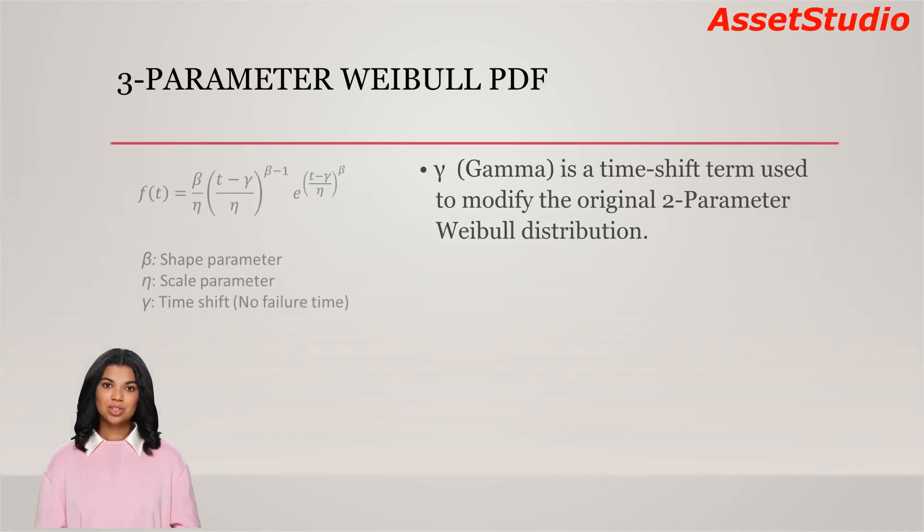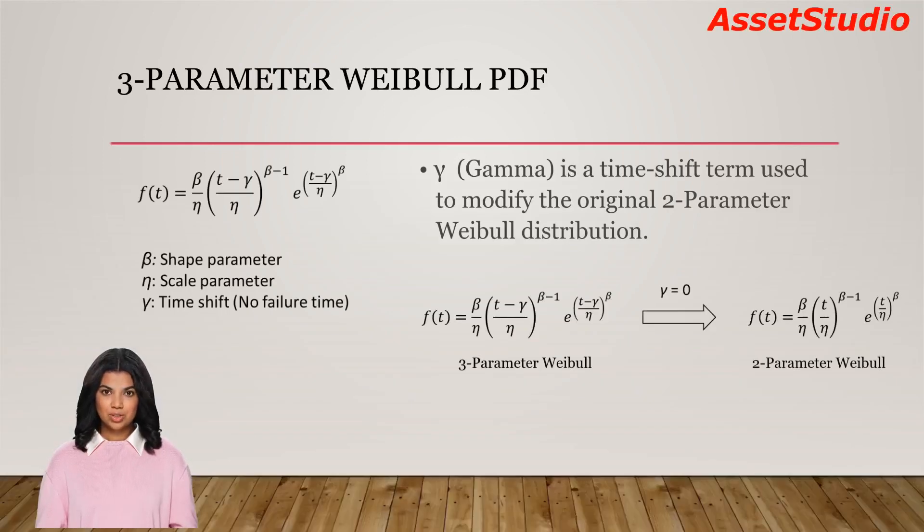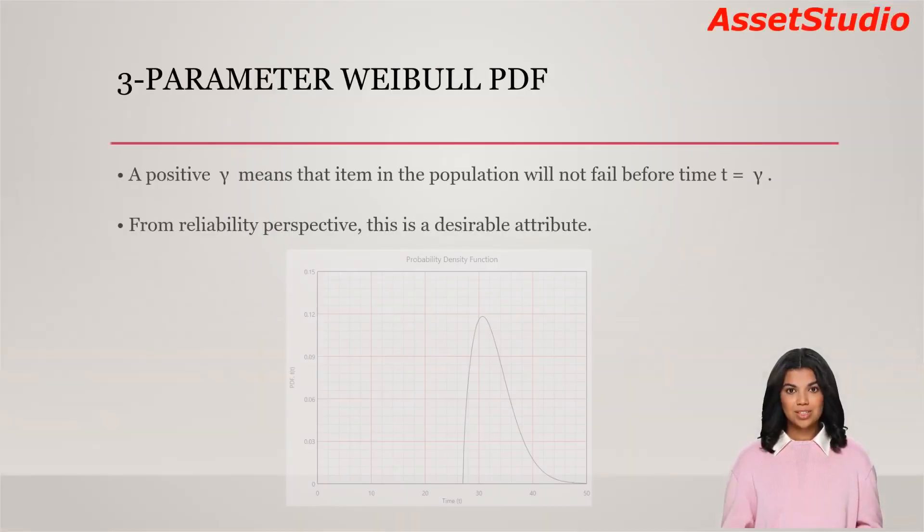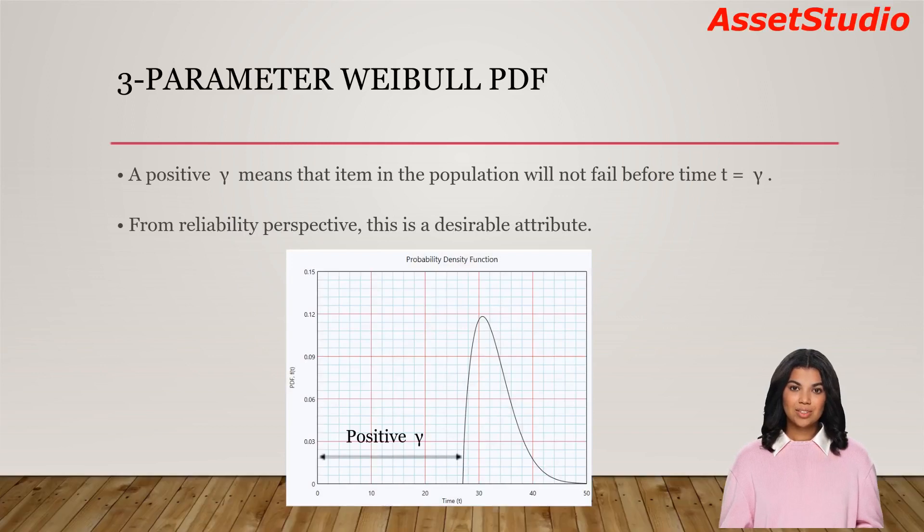Gamma is a time-shift term used to modify the original 2-parameter Weibull distribution. If gamma equal to 0, the 3-parameter Weibull reduces to a 2-parameter Weibull distribution. A positive gamma means that item in the population will not fail before time t equal gamma. From reliability perspective, this is a desirable attribute.